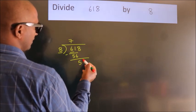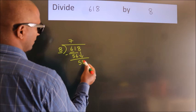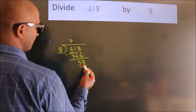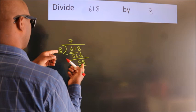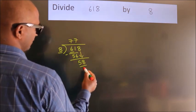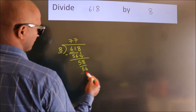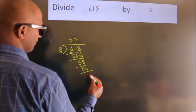After this, bring down the beside number. So 8 down. So 58. A number close to 58 in the 8 table is 8 times 7 is 56. Now we subtract. We get 2.